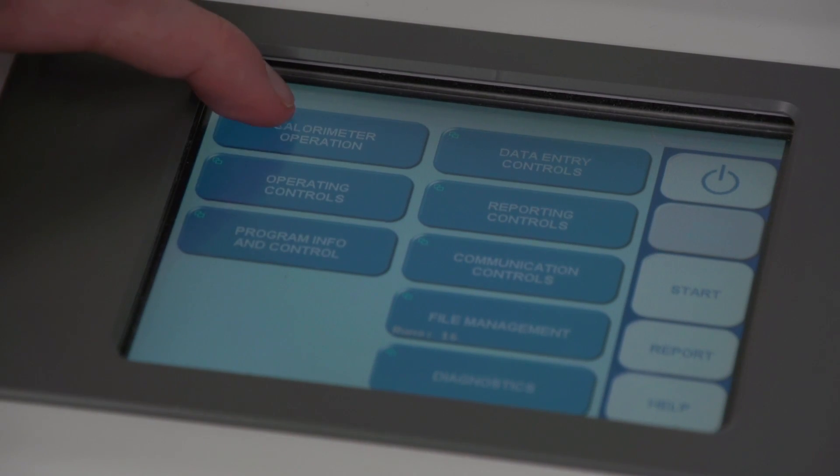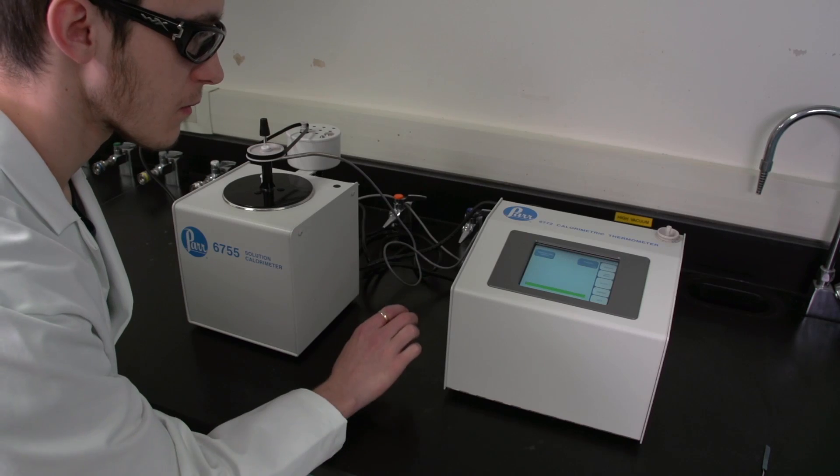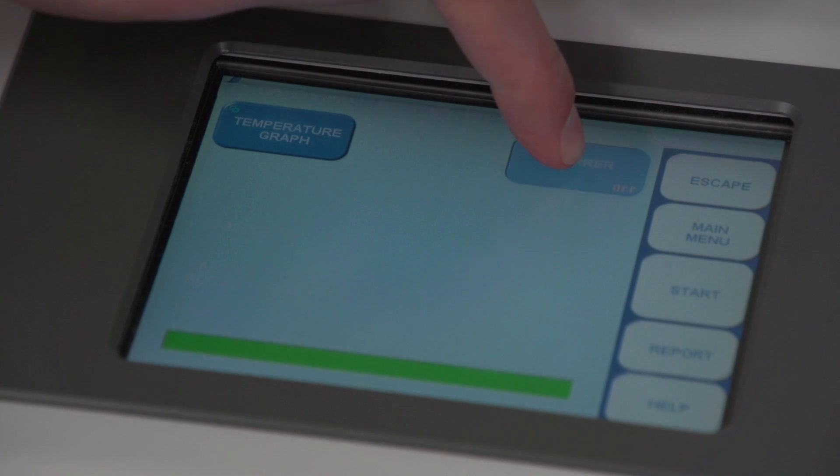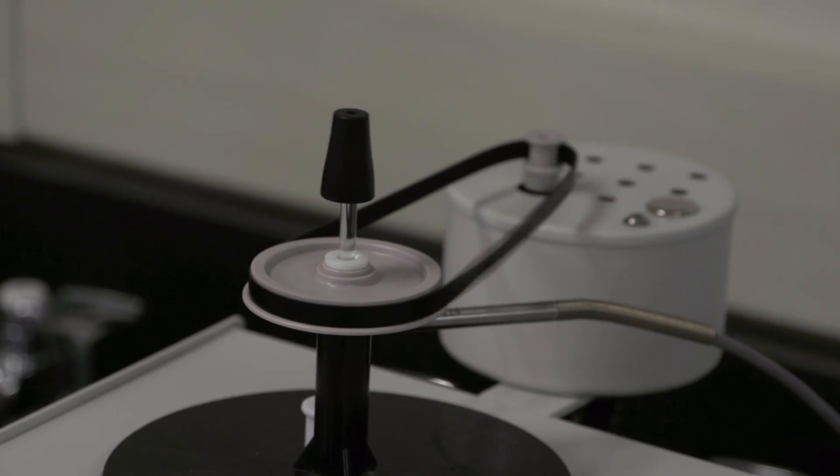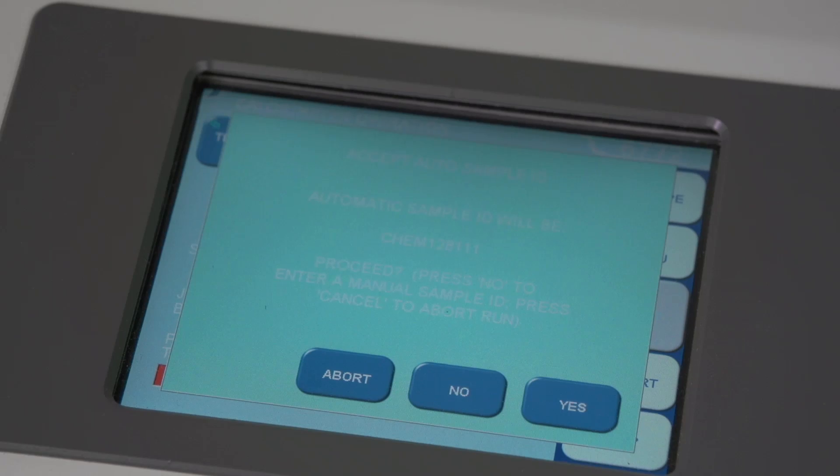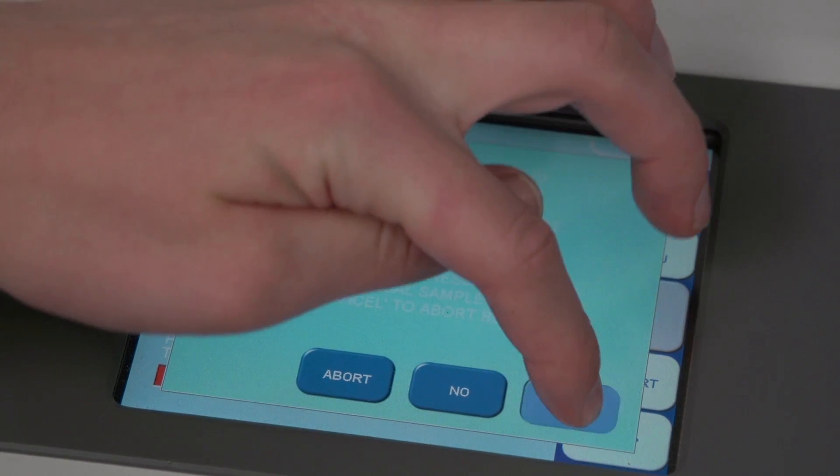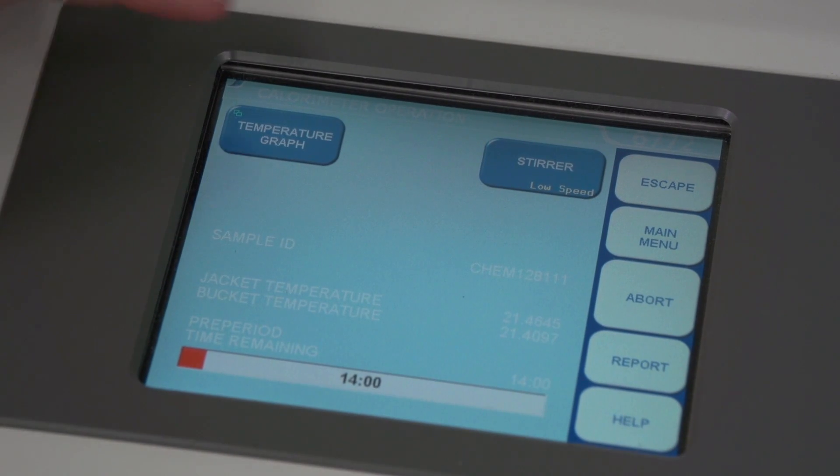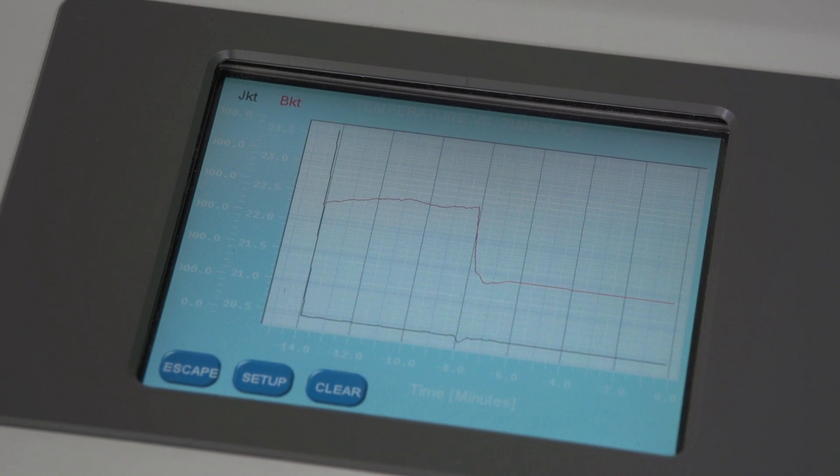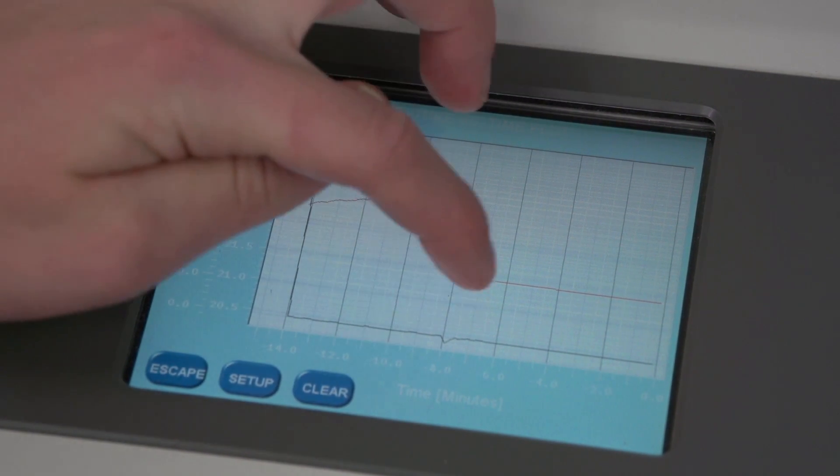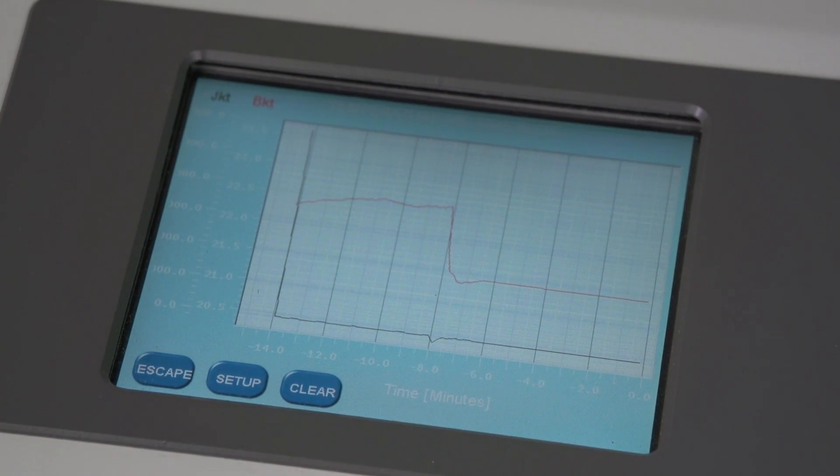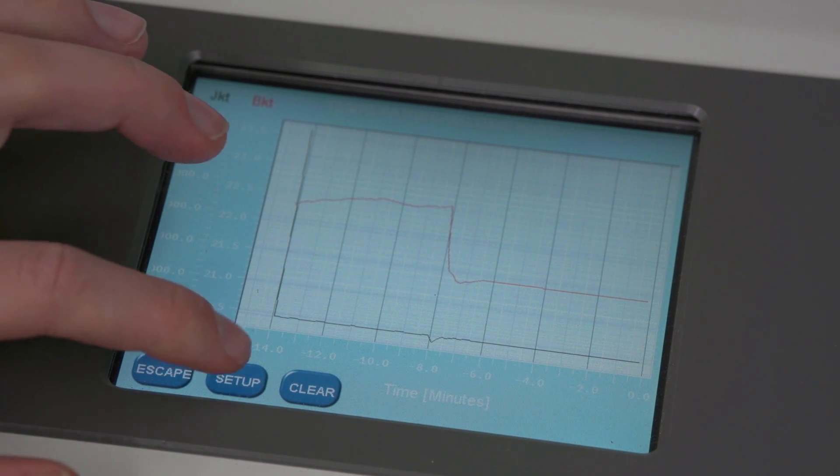Press the calorimeter operation button. Turn the stirrer on low by pressing the stirrer button once. Press start. If everything is fine, press yes. To view the temperature, press the temperature graph button. Observe the red BKT bucket temperature. Press setup.